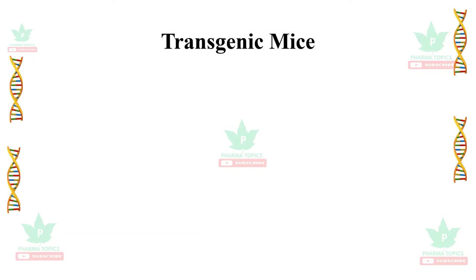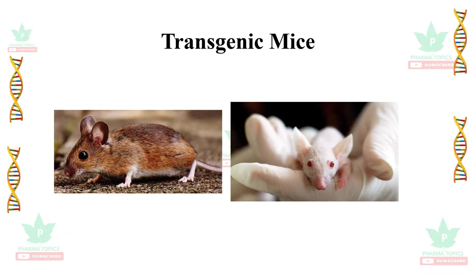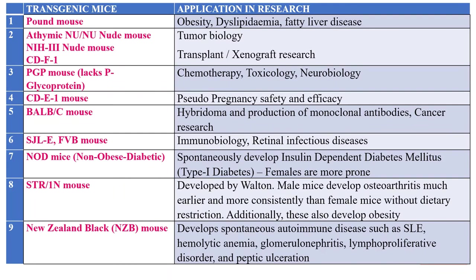Among transgenic animals, transgenic mice are the most widely used, and a large number of models are available for mice compared to other animals. The first model is the ob/ob mouse, useful in obesity studies, dyslipidemia, and fatty liver disease. The athymic nude mouse (nu/nu), NIH3 nude mouse, and CDF1 are useful in tumor biology, transplant research, and xenograft research.